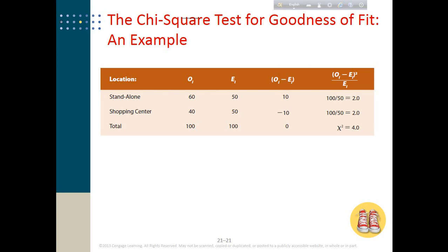We have seen that the number of stores in standalone locations and shopping centers are not the same. That said, statistical software has made this task easier — we no longer need to compare against a table. We simply look at the p-value: if it is greater than the significance level, we accept the null hypothesis; if it is less than the significance level, we reject the null hypothesis.